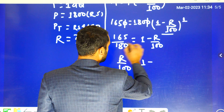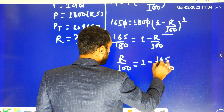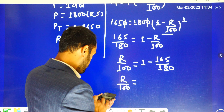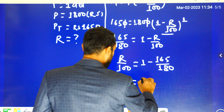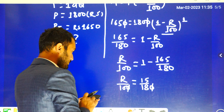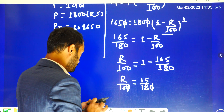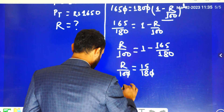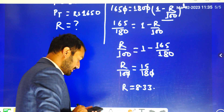So 1 minus 1 is negative. So R by 180 equals 180 minus 165, which is 15. Divided by 180 — so 15 into 10 is 150 divided by 18. So the rate R is 8.3 percent.